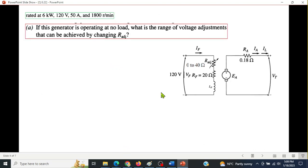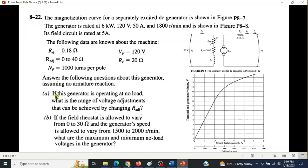The first one, if the generator is operating at no load. Now, what does this mean? When it is operating at no load, that means no current is flowing through this. And since no current is flowing, no drop will be here, and therefore the generated voltage Ea will be equal to the terminal voltage Vt.